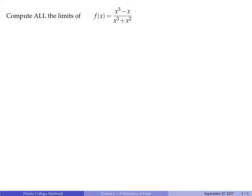The first thing to think about is the theorem that says that rational functions are continuous on their entire domain. A continuous function satisfies: limit as x approaches a of f(x) equals f(a). This is going to be true for every a in the domain of f(x).